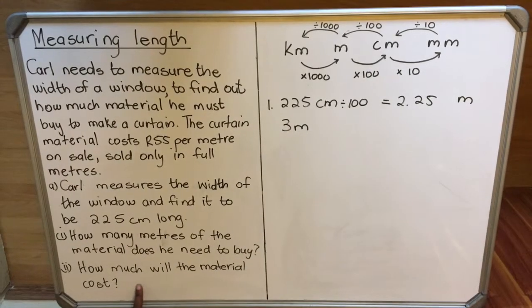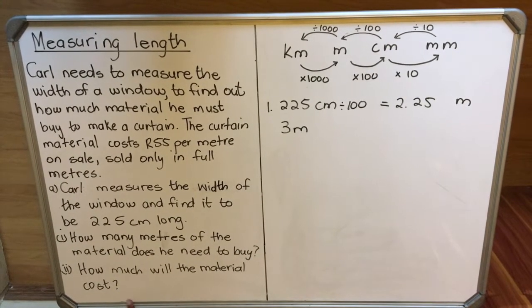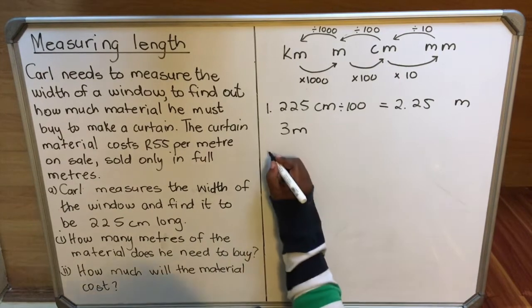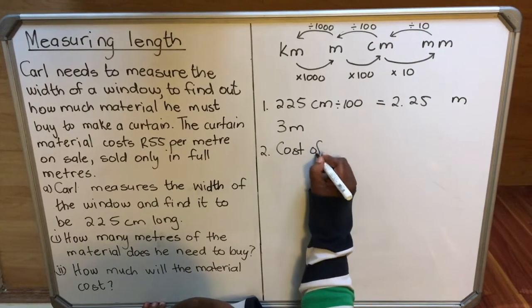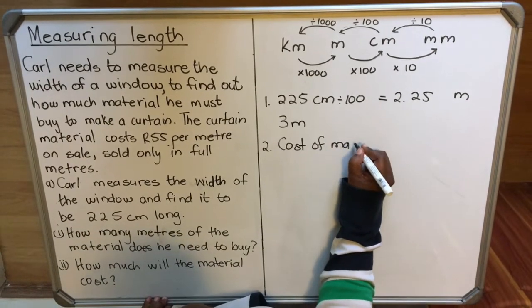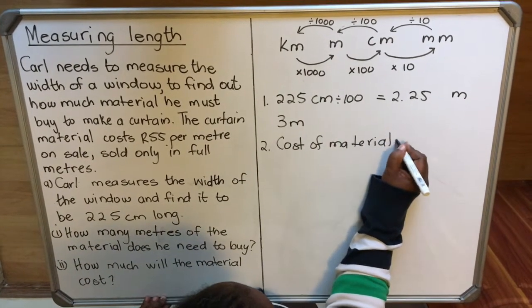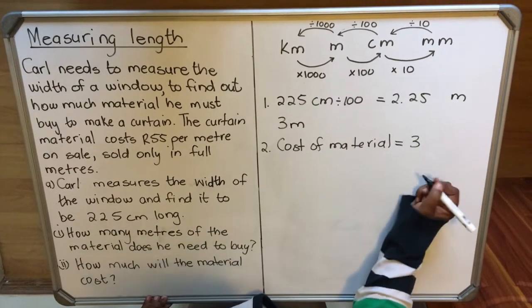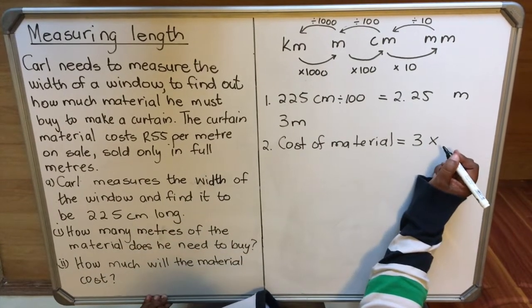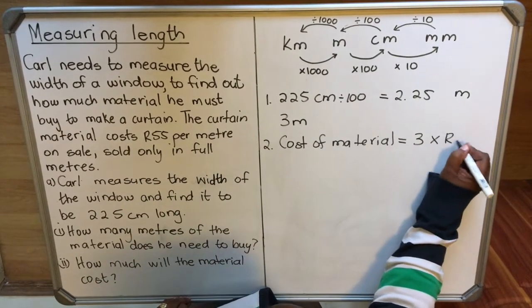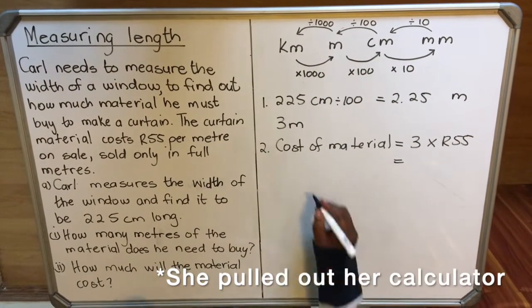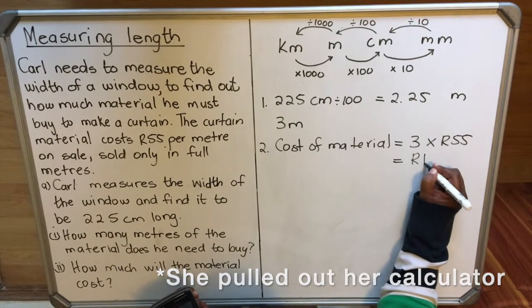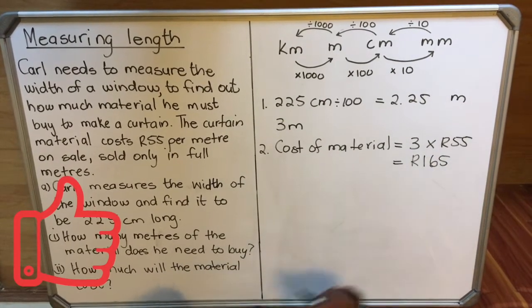Number two: how much will the material cost? In math you need to write what you're calculating. Cost of material equals three meters of material multiplied by $55 per meter. So three times 55, you'll actually pay $165.